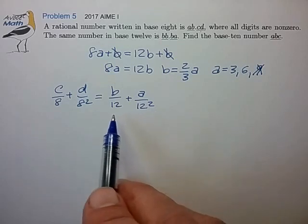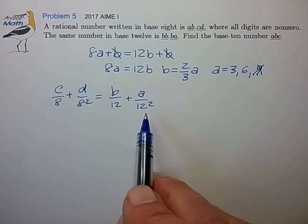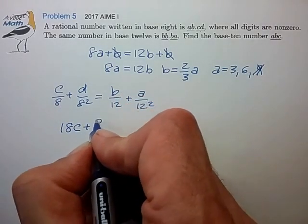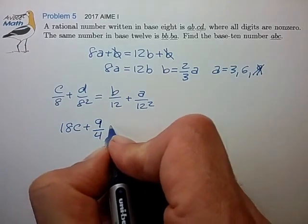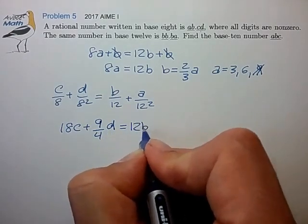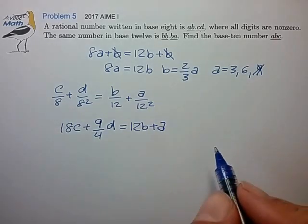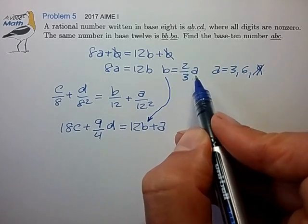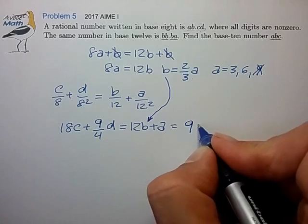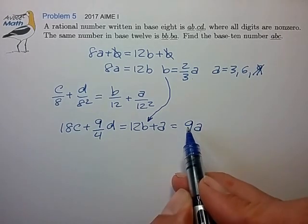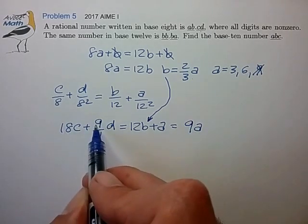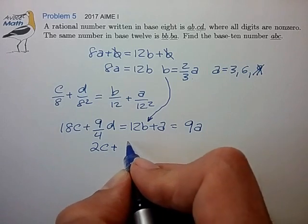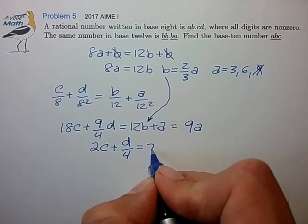Okay, so let's multiply both sides by 12 squared, see if that simplifies things. So that works out to 18C, 9 fourths D is equal to 12B plus A. And we know that B can be written in terms of A. So this reduces to 9A, and that's handy because the factor of 9 appears on both sides of the equation.